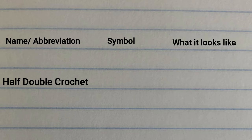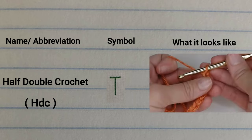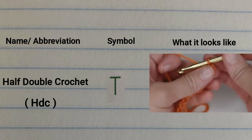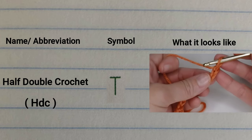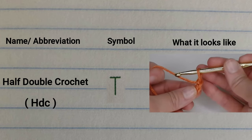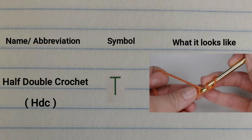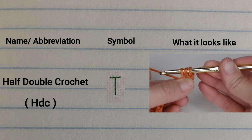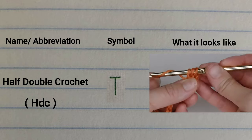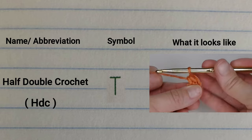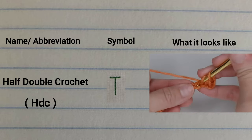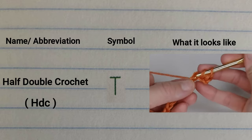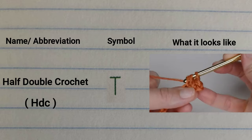Next we have the half double crochet. Here is the abbreviation, here is the symbol, and here is what a half double crochet actually looks like. Going into the second chain from your crochet hook — one, two — yarning over, insert your crochet hook, yarn over, pull through. You have three loops on your crochet hook, yarn over, pull through all three. Then yarn over, insert your crochet hook into the next stitch, yarn over, pull through all three, yarn over, pull through all three.